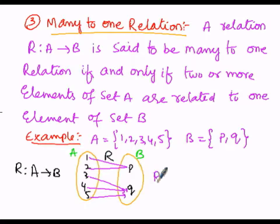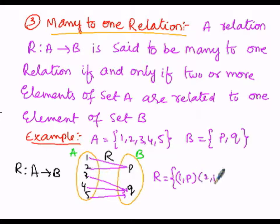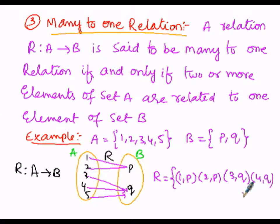The relation R is given by the ordered pairs: (1, P), (2, P), (3, Q), (4, Q), and (5, Q). These are the elements of the relation R from A into B, which falls under the many-to-one relation.